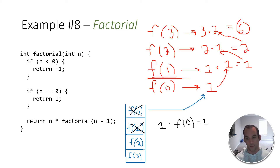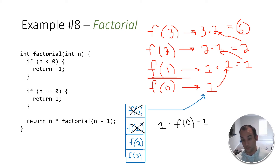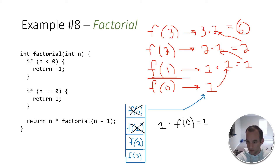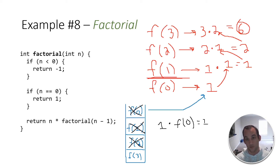Then we pop off factorial of two and return two times factorial of two minus one, which is factorial of one — we already know the answer, it's one. So we say two times one equals two. And then we have one more to pop off the activation stack — the last activation record is factorial of three. Factorial of three returns three times factorial of three minus one, which is factorial of two. So our final answer is three times two equals six, and we are done.